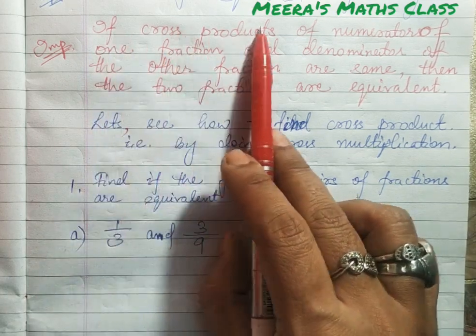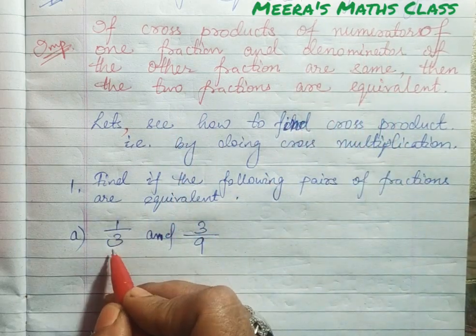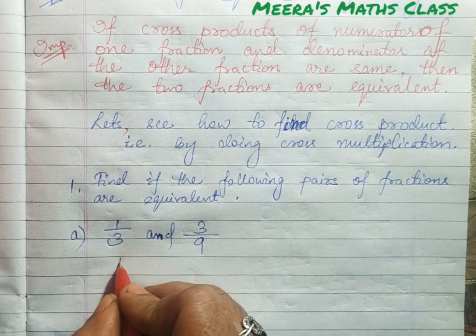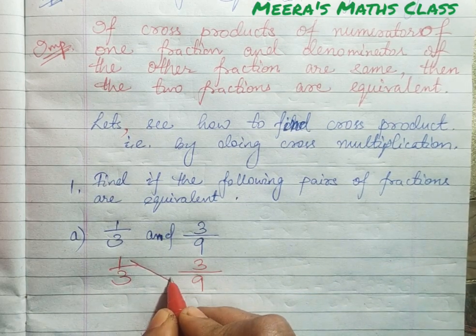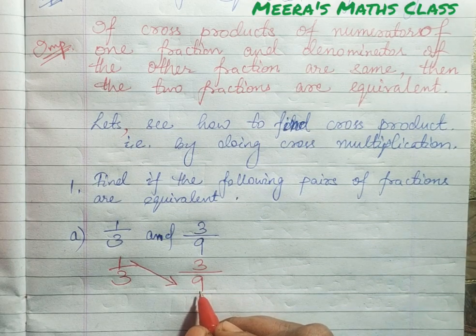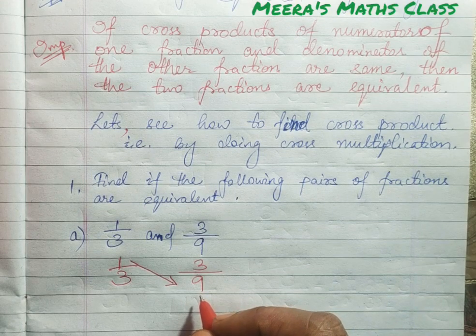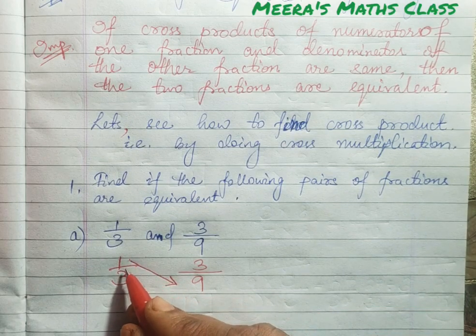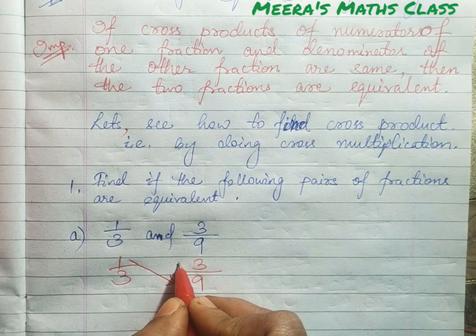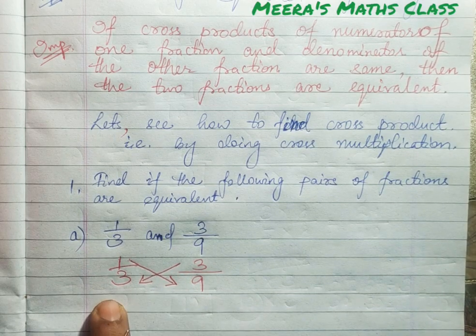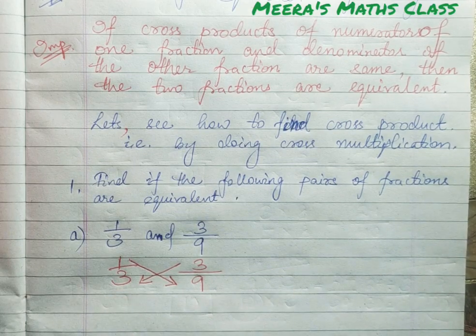According to the rule, if the cross products of the numerator of one fraction and the denominator of the other are the same, then the two fractions are equivalent. That means the numerator of one fraction is multiplied to the denominator of the other fraction, and similarly the numerator of the other fraction is multiplied to the denominator of the first fraction. If their products are equal, the fractions are equivalent.